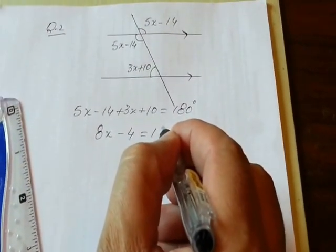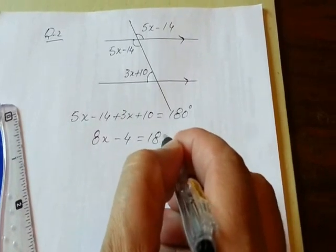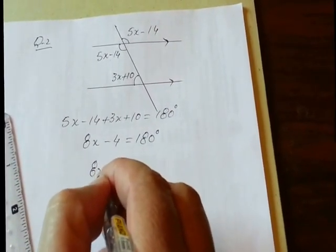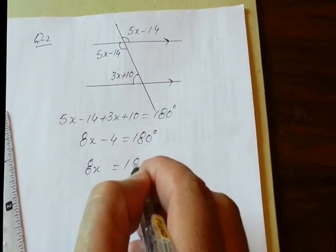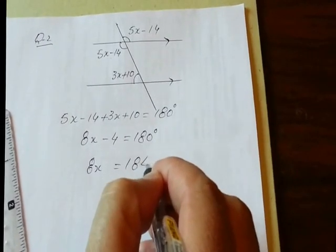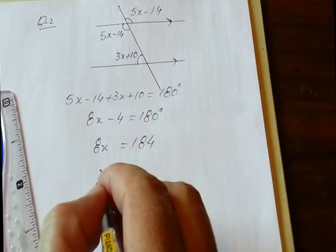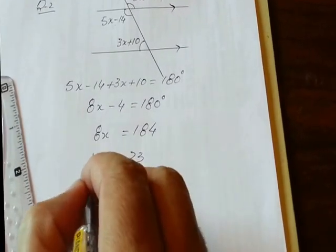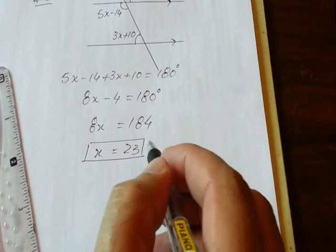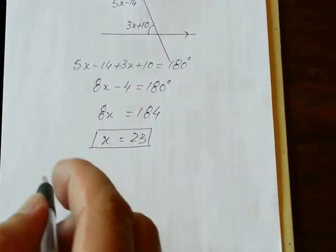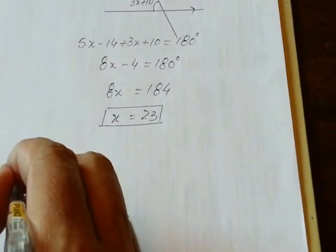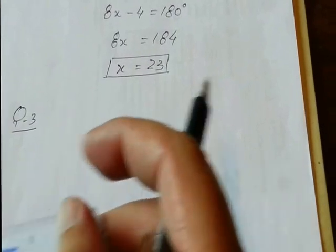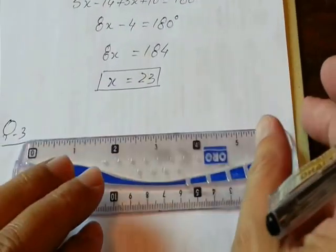The sum of the two interior angles equals 180 degrees: 8x minus 4 = 180, so 8x = 184, giving x = 23.